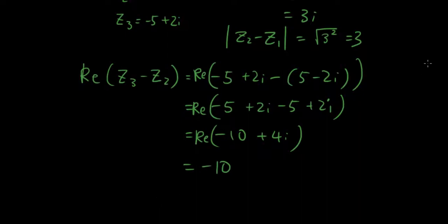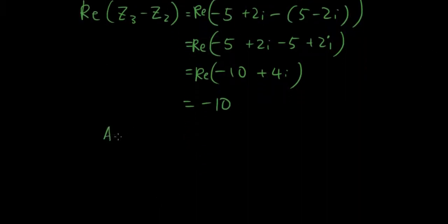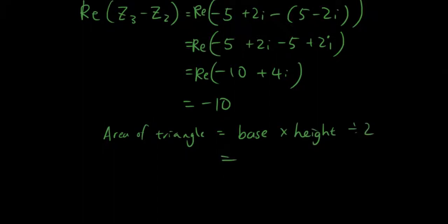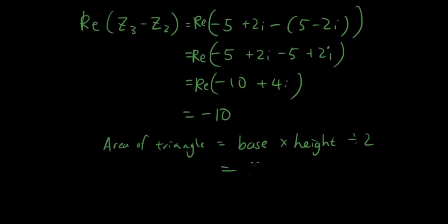So the area of the triangle is just base times height divided by 2, right, and the base is 3, and the height is 10 divided by 2. So that's 15 units squared.